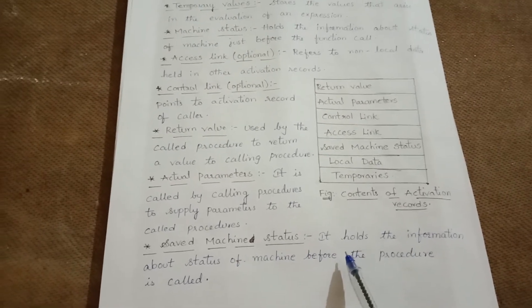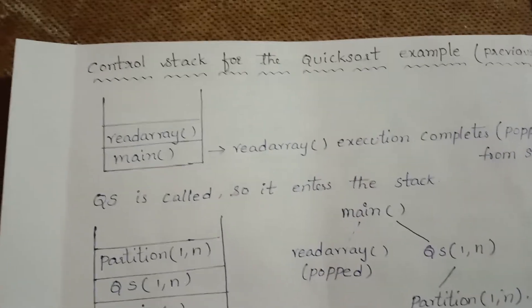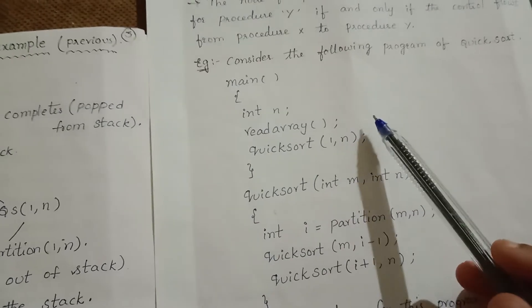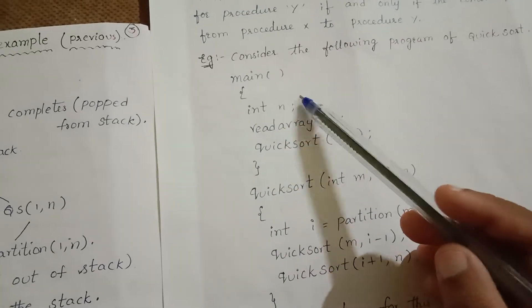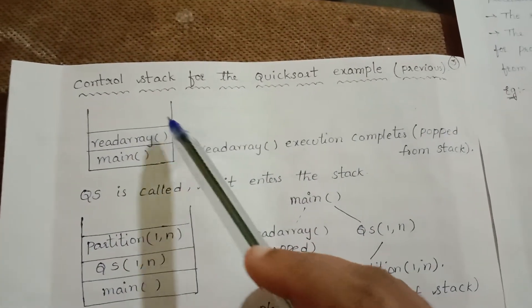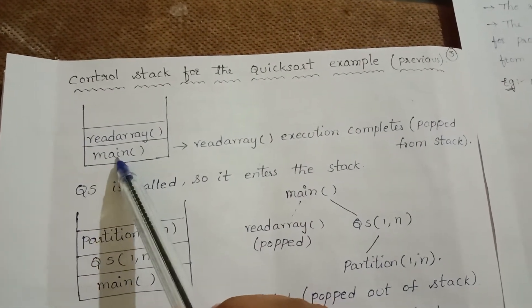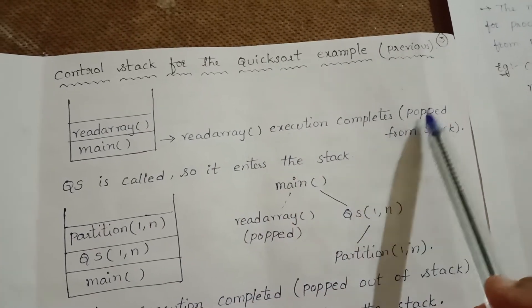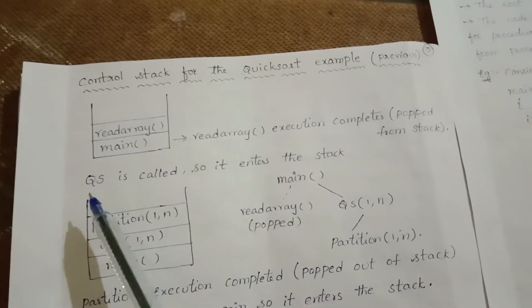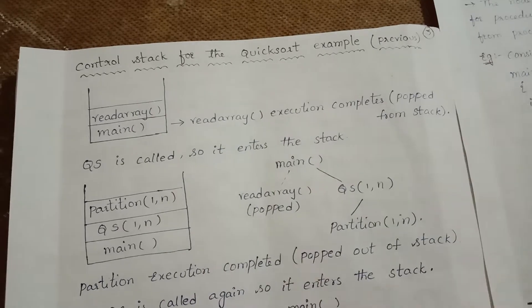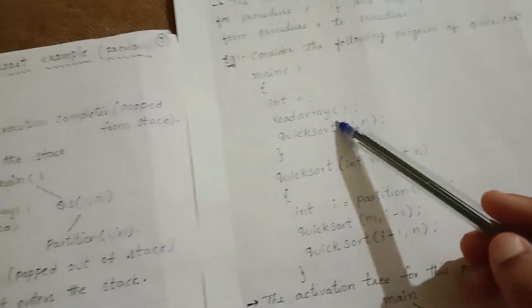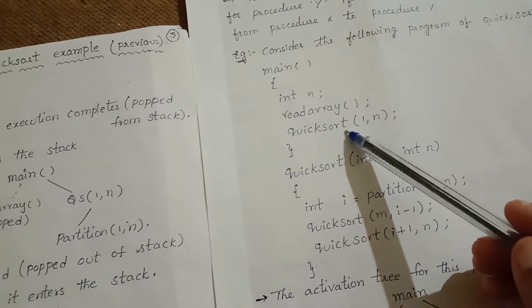For the previous quicksort example, the control stack works as follows. In the main function we have read array, so first main is inserted into the stack, then read array is inserted. When read array execution completes, it is popped from the stack. Next, quicksort is called and enters the stack.